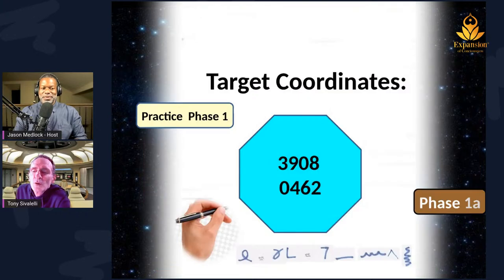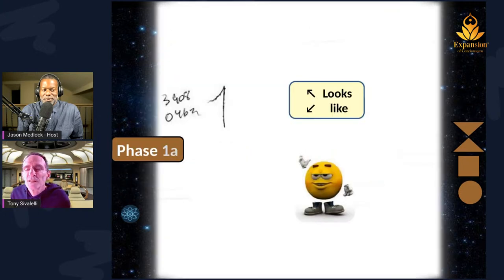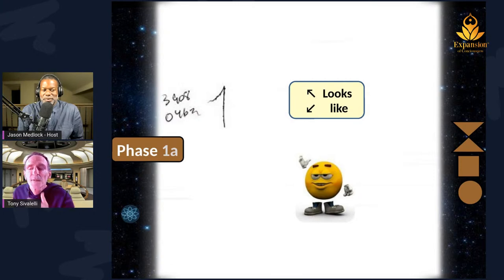The target coordinates look like this — you just do one of the ideograms on the bottom, right next to it to the right on your sheet of paper. You sketch the target coordinates, then off to the right sketch one of the ideograms. It ends up just looking like this: 3908, 0462 — sketch out an ideogram. I say the target coordinates aloud, you write one set of four on top of the other, and quickly sketch out an ideogram right next to that. The ideogram is about an inch or two by an inch or two.